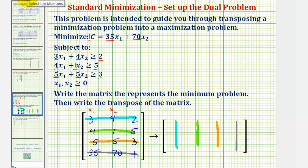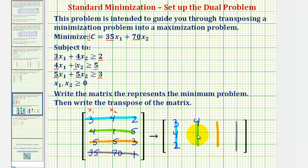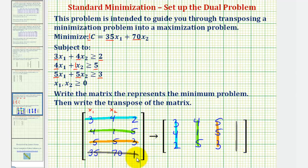So the first column will be three, four, two. The second column will be four, one, five. The third column will be five, five, three. And the fourth column will be 35, 71.